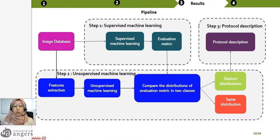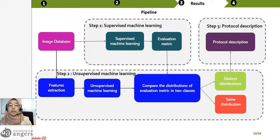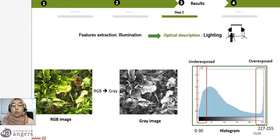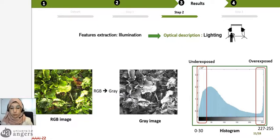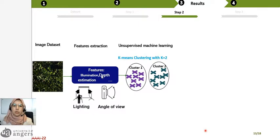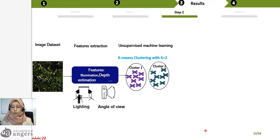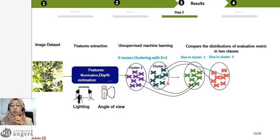Now let's move to step two. This step starts with feature extraction. I should mention that the features used here are not the same feature space used in supervised machine learning — here we extract features that have an optical interpretation. For example, we calculate illumination to get information about the optimal lighting system. We have RGB images, we convert them to grayscale, and then count pixels with low values and pixels close to saturation. Another feature used is depth estimation to provide the best angle of view. We then apply k-means with k equal to 2 for each feature.